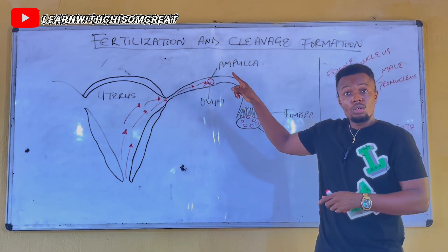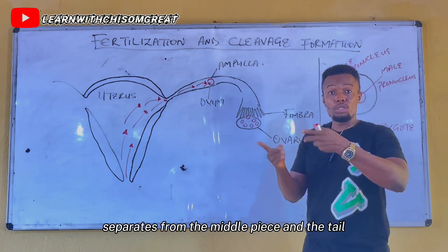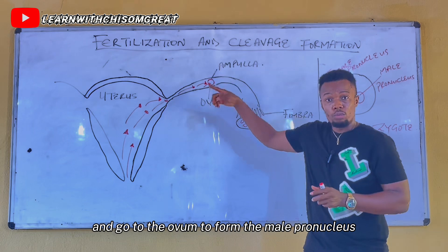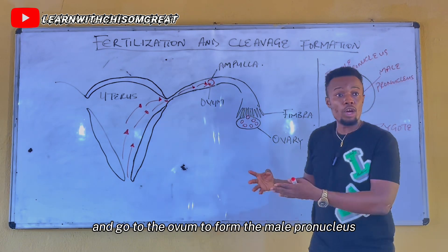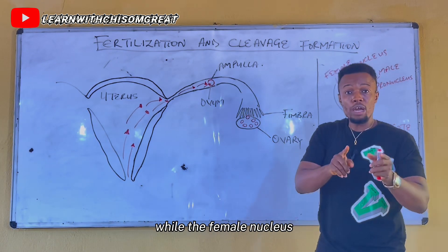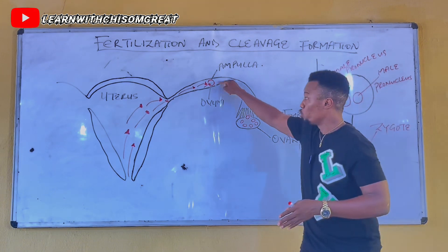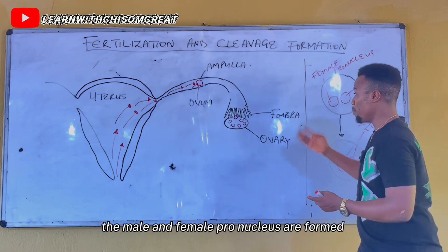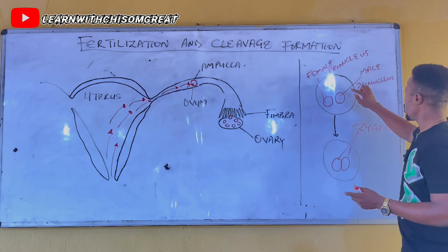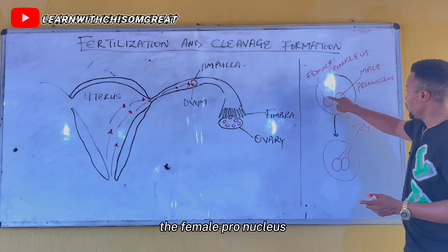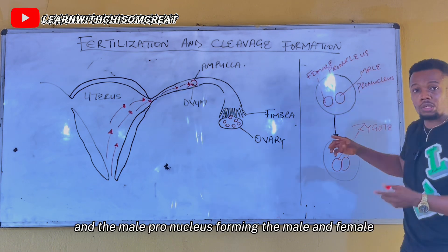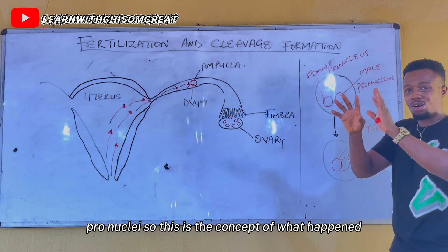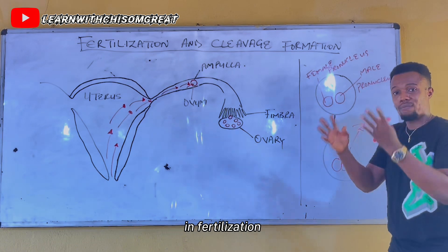The head of the sperm separates from the middle piece and the tail, and goes to the ovum to form the male pronucleus. The nucleus in the ovum forms the female pronucleus. So that is how the male and female pronuclei are formed, and this is the concept of what happens in fertilization.